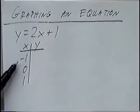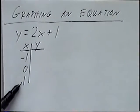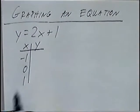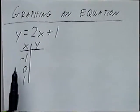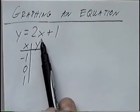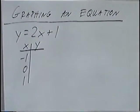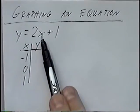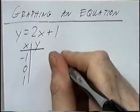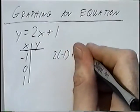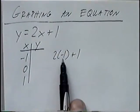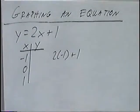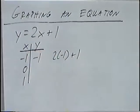The best numbers to use are negative one, zero, and positive one — one negative number, zero in the middle, and positive one on the right. To solve for the y values, we take x, plug it into the original equation, and figure out what y equals. Plugging negative one in for x: two times negative one plus one gives negative two plus one, which equals negative one.